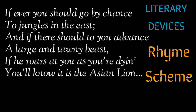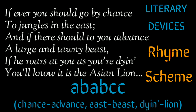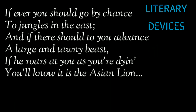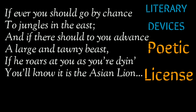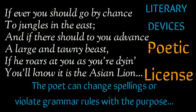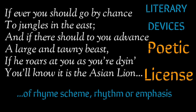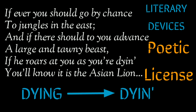Regarding the literary devices in this stanza, beginning with the rhyme scheme: the poem is divided into six stanzas of six lines each, and all stanzas follow the same rhyme scheme — A, B, A, B, C, C. The poet has also used poetic license, a device where the poet can change spellings or violate grammatical rules for the purpose of rhyme or rhythm. Here, the word 'dying' has been changed to 'dying' so that it rhymes with the word 'lion,' both phonetically and visually.